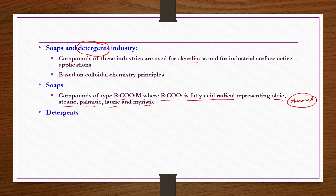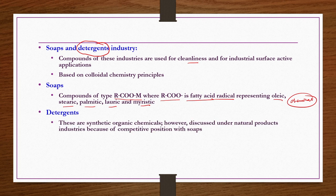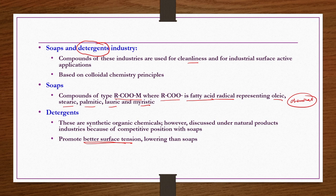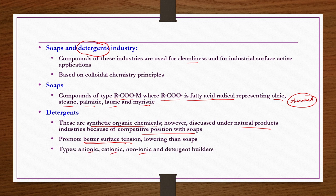Detergents have a lower surface tension compared to soaps in general and therefore have better performance. Though synthetic organic chemicals, detergents are discussed under natural product industries because of their competitive position with soaps. There are four different types of detergents: anionic, cationic, nonionic, and detergent builders. What falls under each category will be discussed when we cover these industries individually.